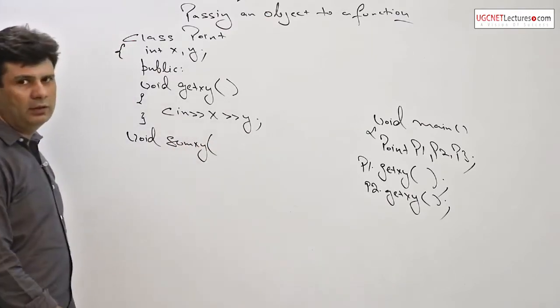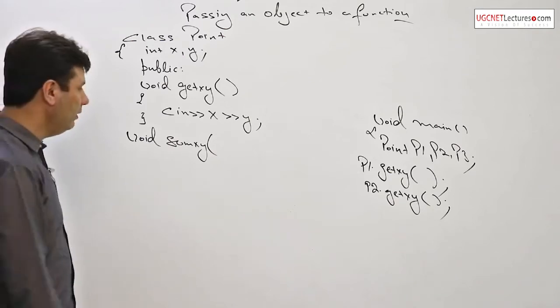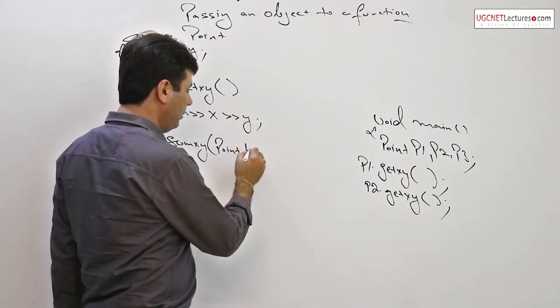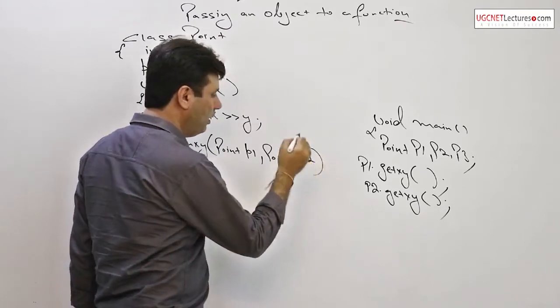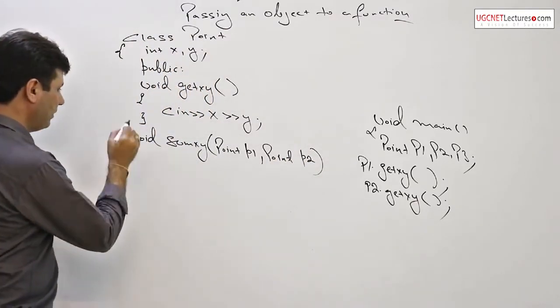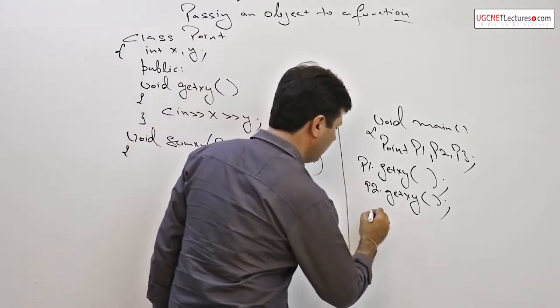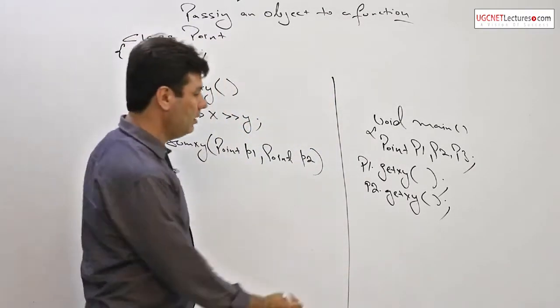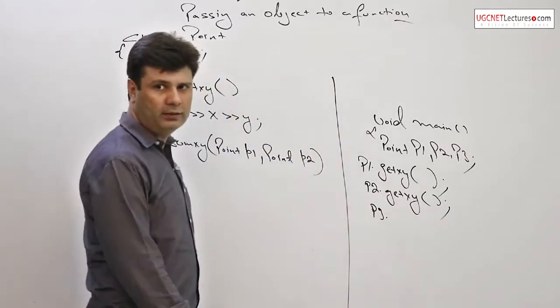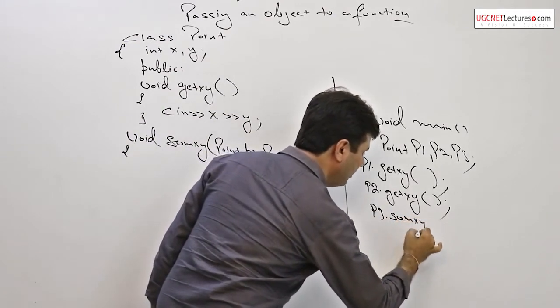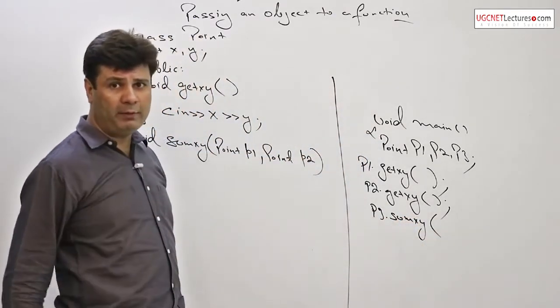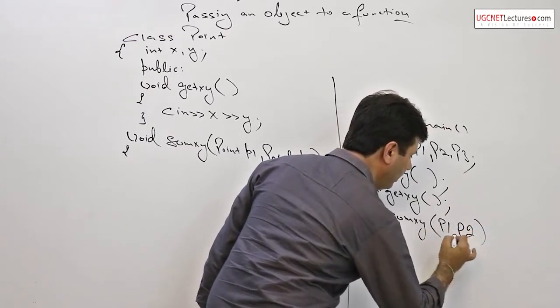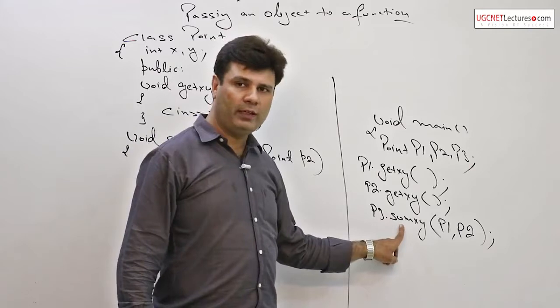In order to sum the value of p1 and p2 and to be stored within p3, only two objects as arguments are required within the parenthesis. Now how I will call it? I will call sum xy function by the reference of p3 object. And this time instead of passing three arguments, previously we passed three arguments, p3 was also passed as an argument. But this time I will pass only p1 and p2 because I am calling the function sum xy by p3 reference.